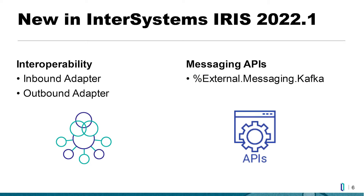So let's talk about what's new with InterSystems IRIS 2022.1. In 2022.1, we've incorporated Kafka in two important ways. We've added Kafka adapters to the interoperability component of IRIS, which is a low-code workflow engine. This makes it really easy to read messages from a Kafka topic, save them to your database, process them however you need to, and maybe send them to a downstream system or back to another Kafka topic. We've also added lower-level messaging APIs to IRIS to make it easy to integrate Kafka with your application. These APIs are built right into IRIS and so can be used from either ObjectScript or the new embedded Python feature.